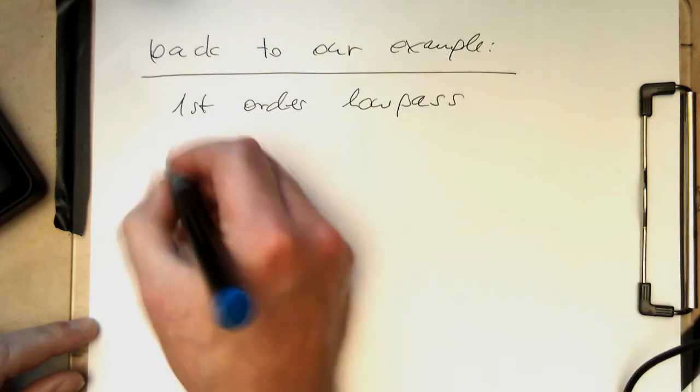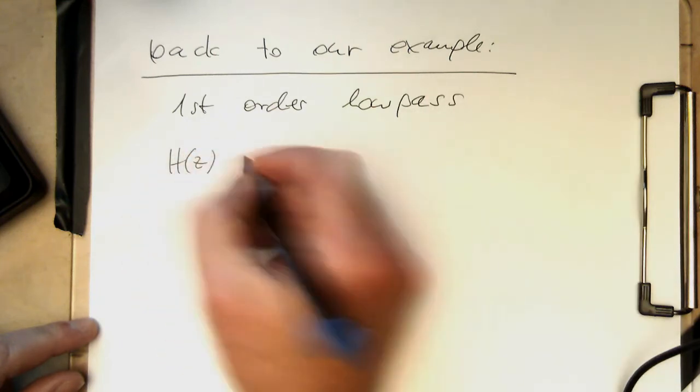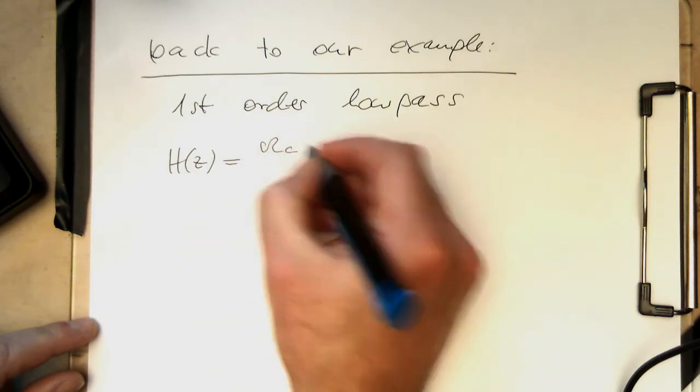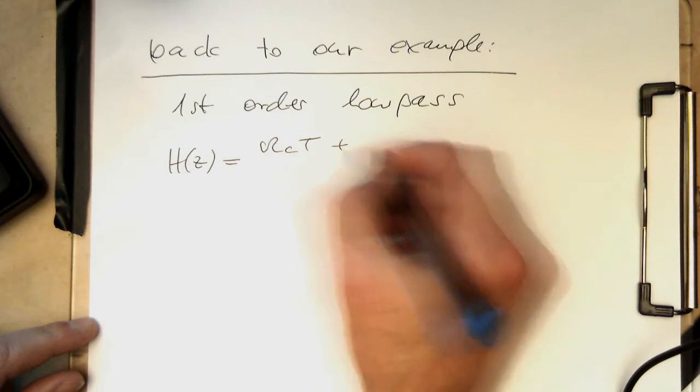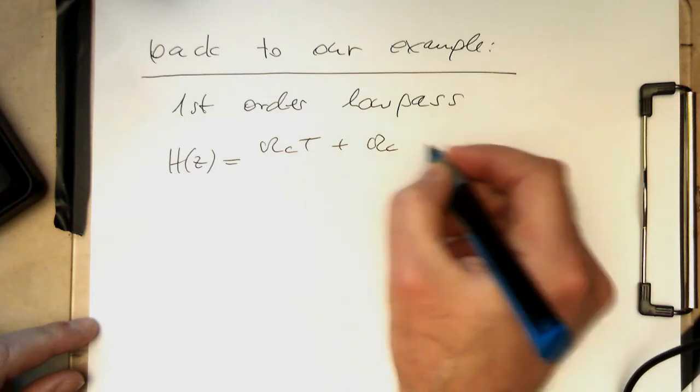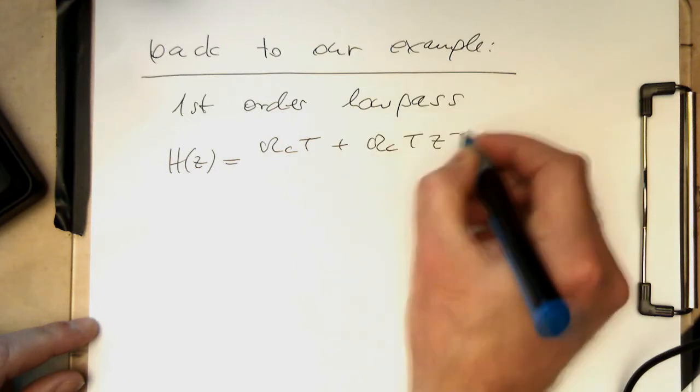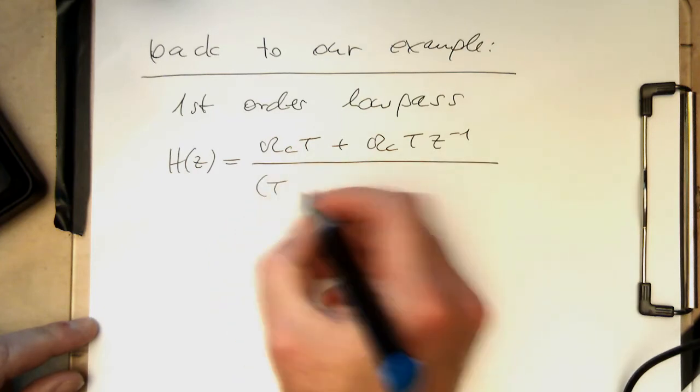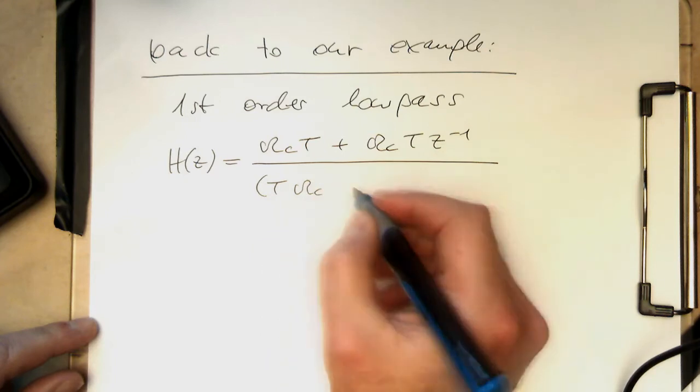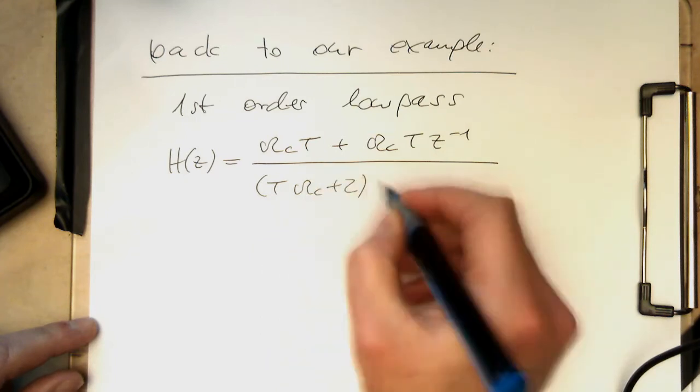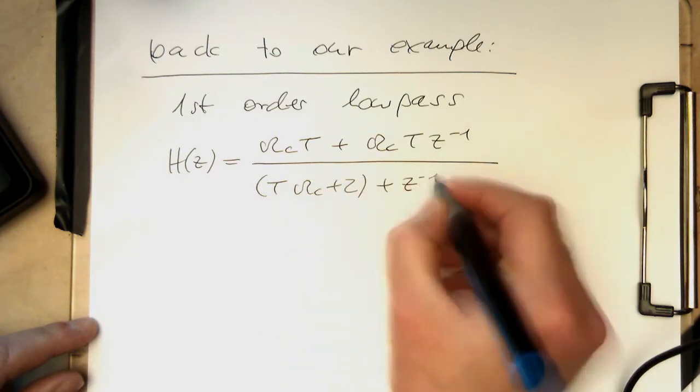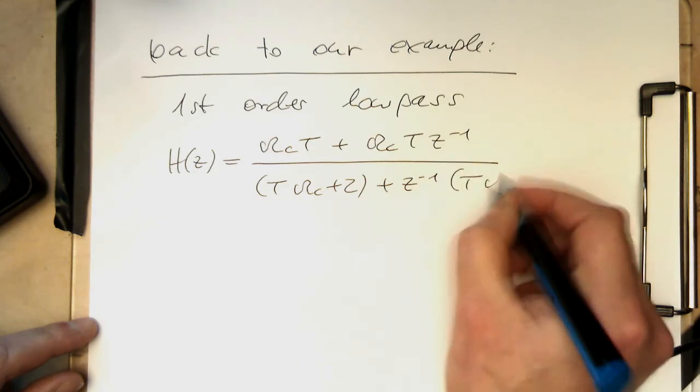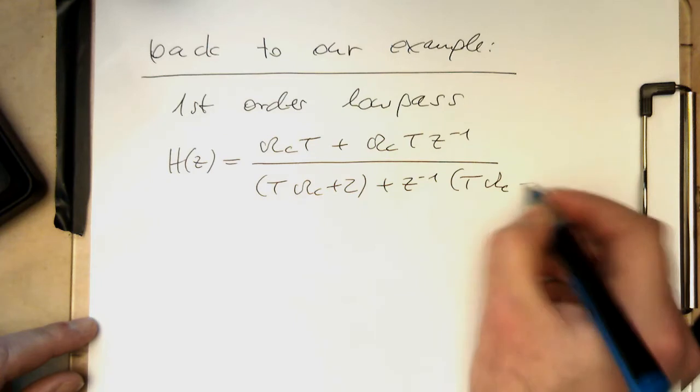That was just when it doesn't look so messy. We have omega c t plus omega c t z to the minus 1, divided by t omega c plus 2, and then z to the minus 1 times t omega c minus 2.